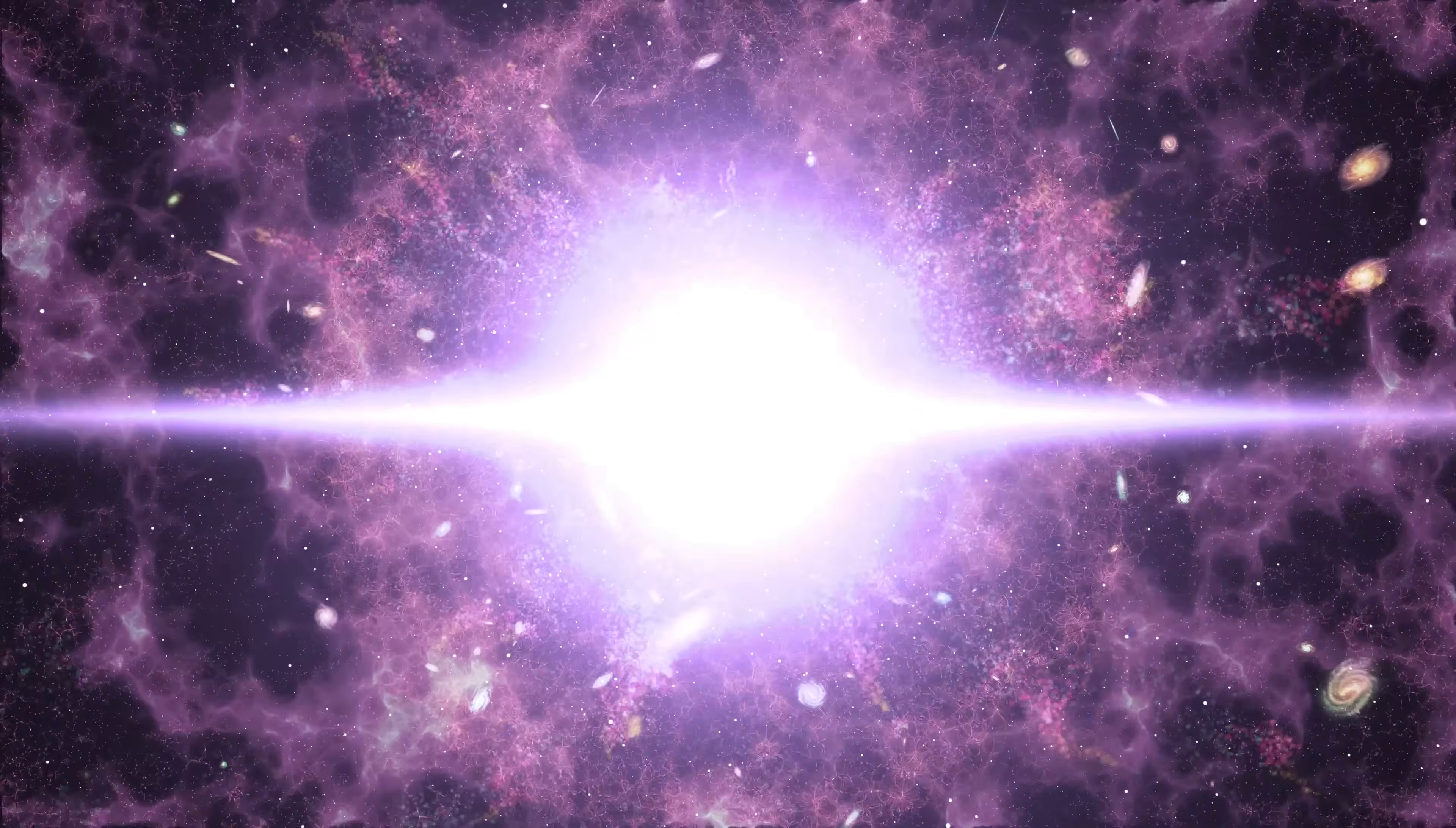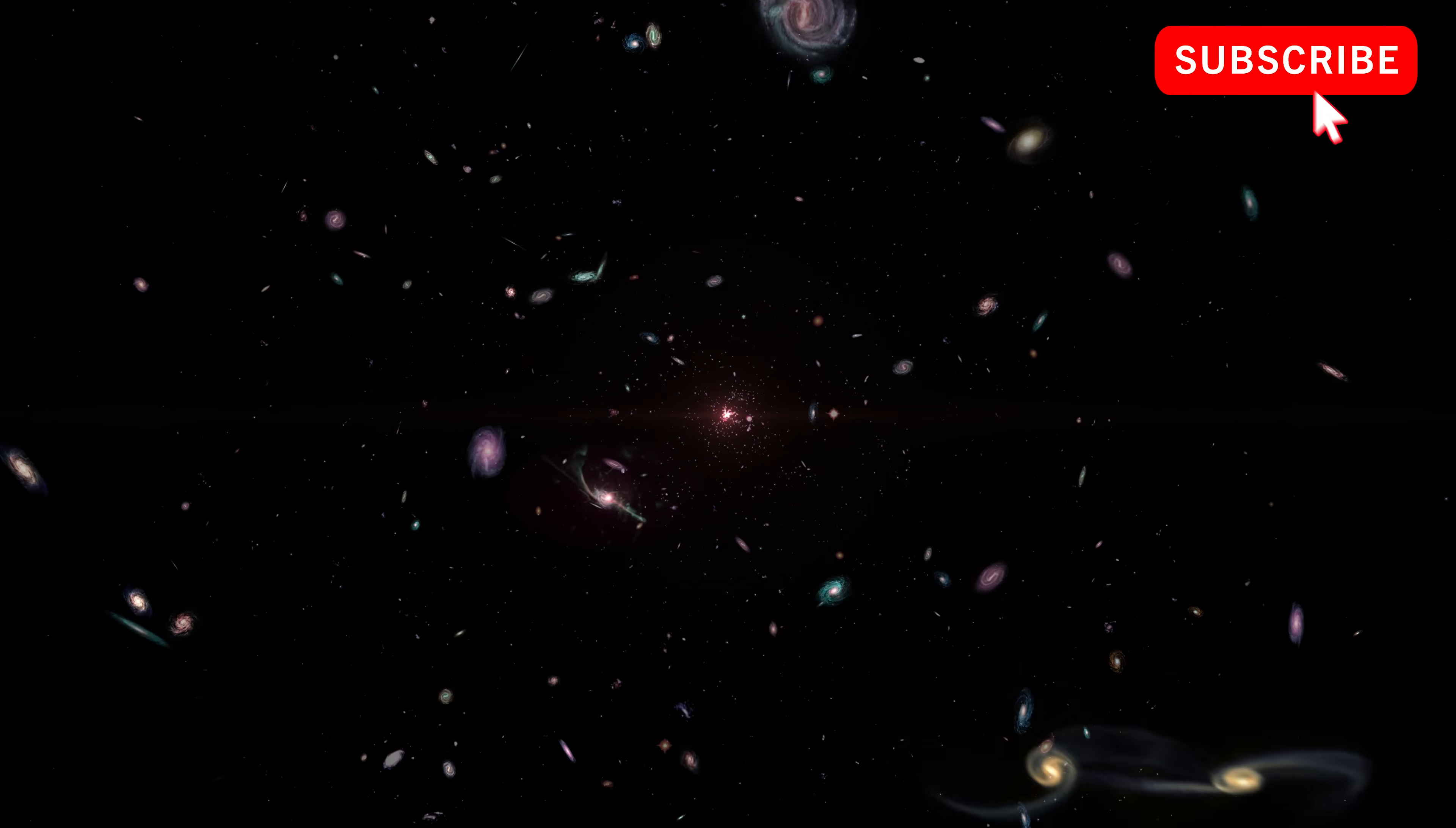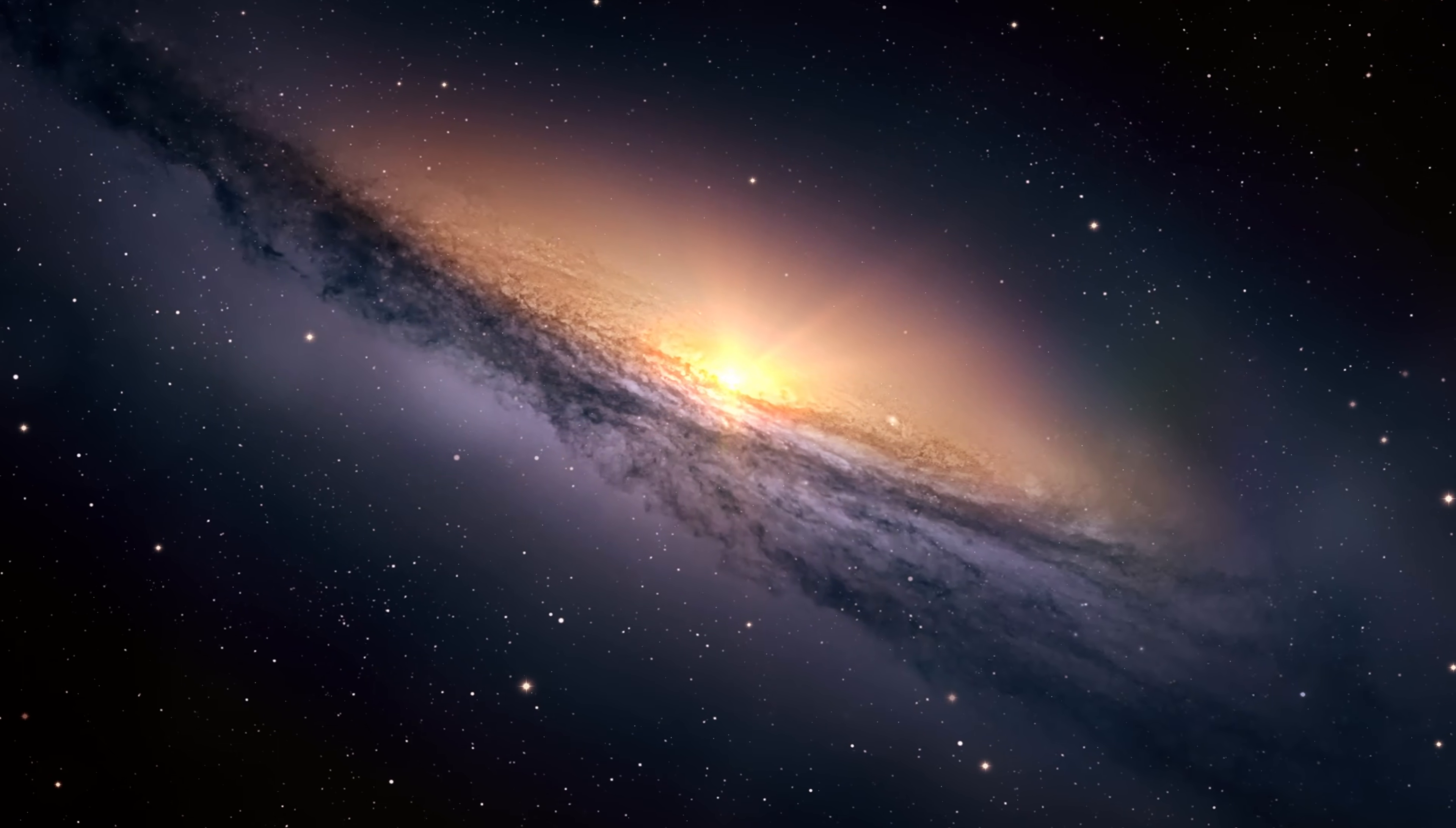The stars, galaxies, planets and other objects we see today when we peer out into the cosmos did not just pop into existence after the Big Bang. It took hundreds of millions of years before even the first stars began to ignite within the first proto-galaxies. But before the age of starlight, there was a time when the universe was completely dark.